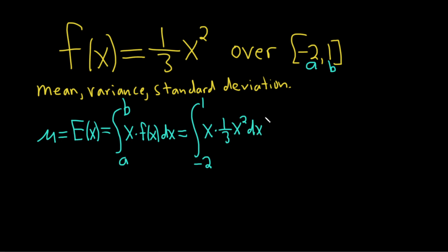We can multiply these, so this equals the integral from negative 2 to 1 of one-third x cubed dx. To integrate this, we'll use the power rule.